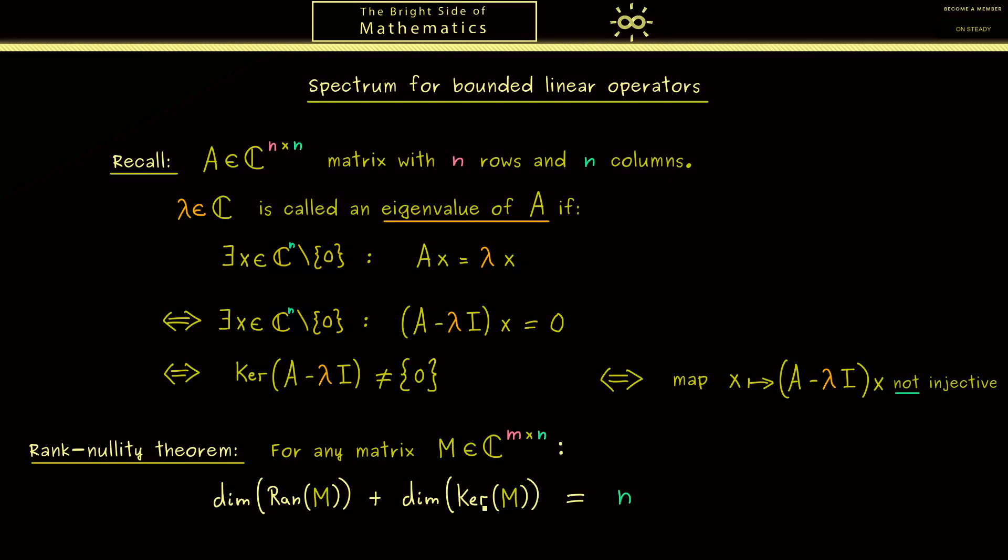Now because this formula connects the range and the kernel, we immediately get for square matrices and this map that injectivity, bijectivity, and surjectivity are indeed the same thing. Hence here we could also say this map is not surjective or simply the map is not invertible.